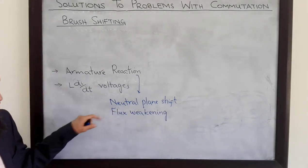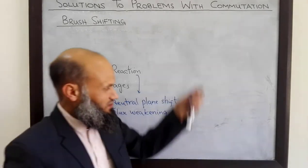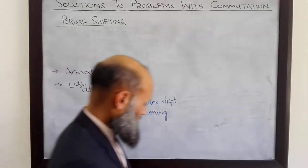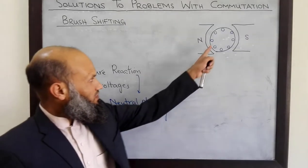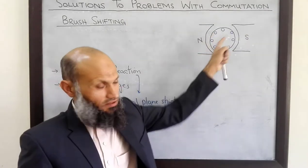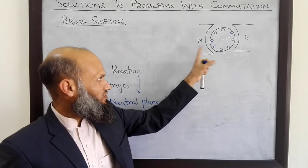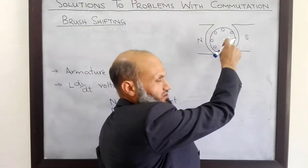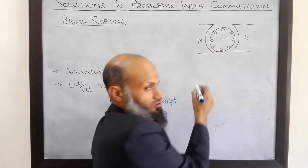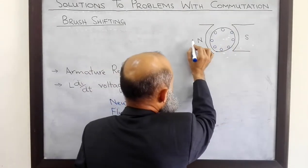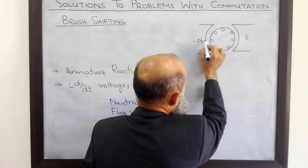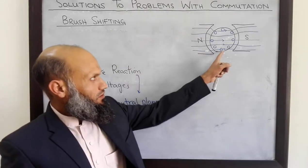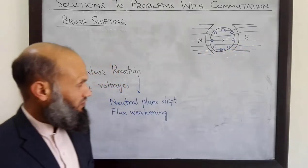Let's demonstrate these two effects with the help of a figure we have already studied. If no current is flowing in the coils, we have the magnetic field due to the main poles and the flux lines are uniformly distributed along the surface of the rotor. These flux lines are shown here. This is the magnetic field and flux lines when there is no current in the coils.